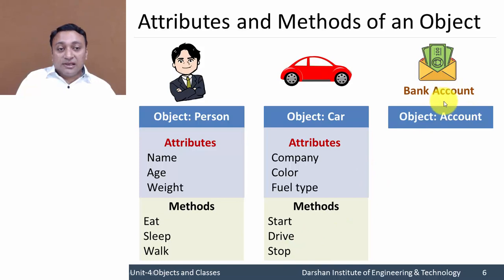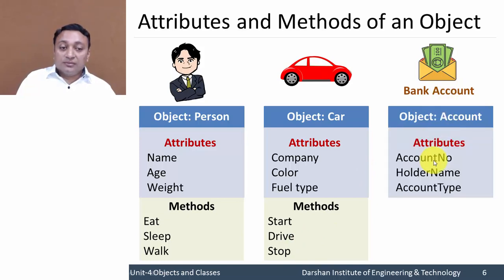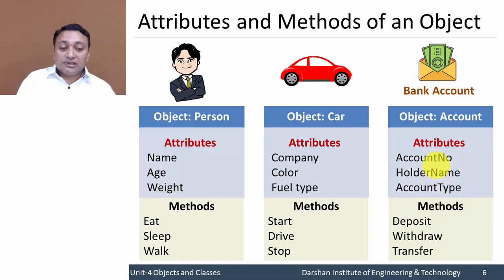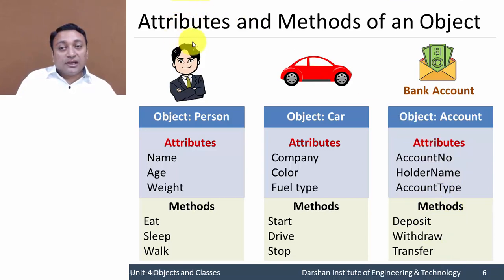Same way, for the logical object 'bank account', attributes would be account number, holder name, and account type. Operations we can perform on a bank account are deposit, withdraw, or transfer — so these would be methods of that object. Each and every object has some attributes and methods, or we can say operations that could be performed by that object.